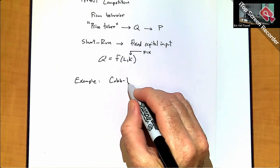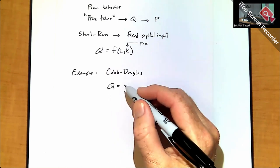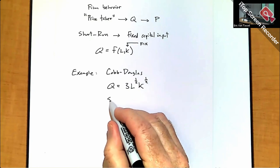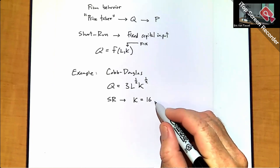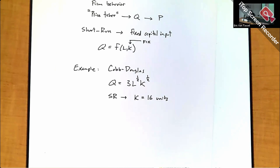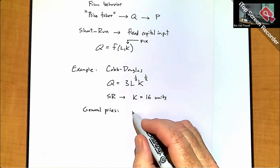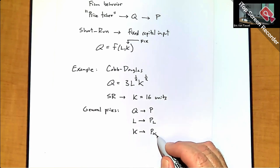For our example, we'll use a Cobb-Douglas production function: Q equals 3 times L to the one-half times K to the one-half. In the short run — defined as a period in which certain inputs cannot be changed — we'll fix K at 16 units. For input prices, we keep things general: good Q has price P, labor has price PL, and capital has price PK.